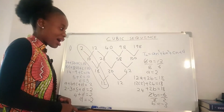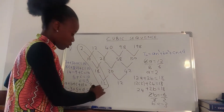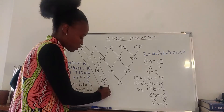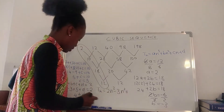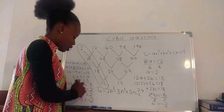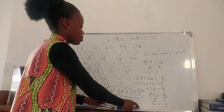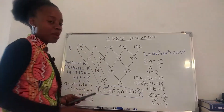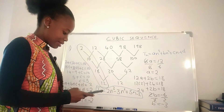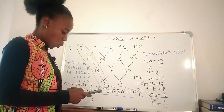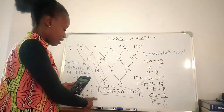Now we substitute a, b, c, d into the cubic formula. T(n) = 2n³ − 3n² + 5n − 2. Let's verify using term 3: 2(3)³ − 3(3)² + 5(3) − 2 = 54 − 27 + 15 − 2 = 40. Term 3 is indeed 40, so our nth-term expression is correct.